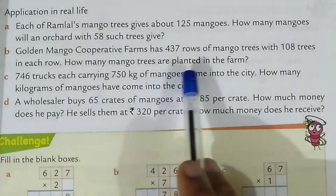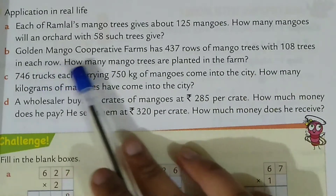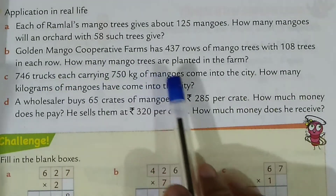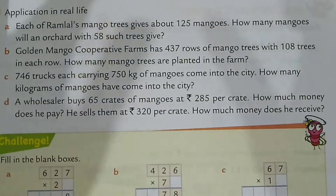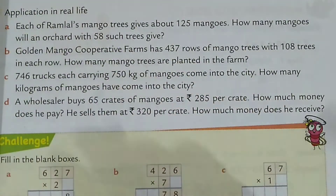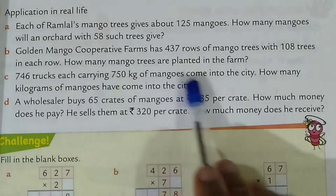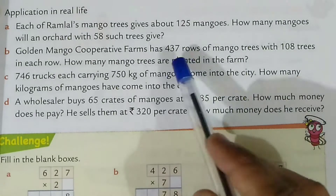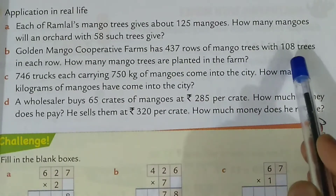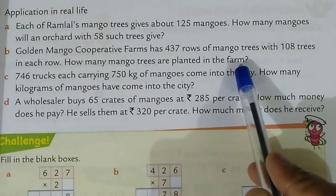How many mango trees are planted in the farm? Same approach — in the golden mango cooperative farm there are 437 rows and in one row there are 108 trees. So total mango trees planted in the farm: 437 into 108. Understood? Next.